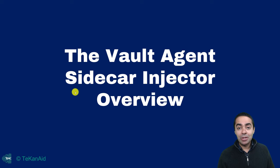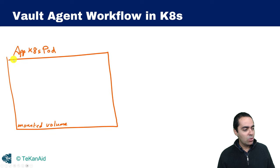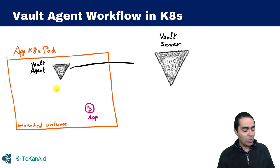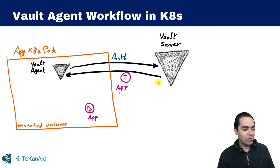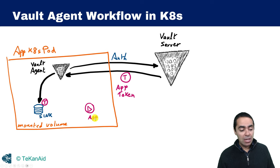The Vault agent sidecar injector workflow in Kubernetes looks like this. You have an application Kubernetes pod with a mounted volume containing your app and the Vault agent sidecar. The Vault agent authenticates with the Vault server, which responds with an application token. The Vault agent stores this token inside a sync file in the mounted volume so the application can access it. If the application is Vault-aware, it can grab this token and talk directly to the Vault server to retrieve secrets — but this means your application code needs to be modified to call the Vault API.